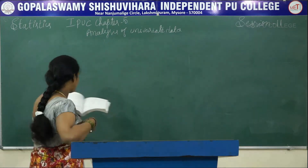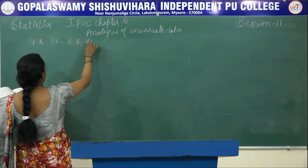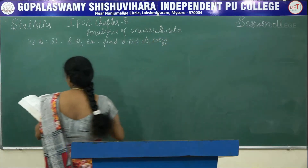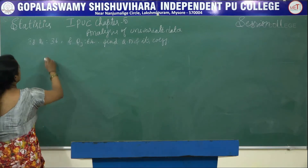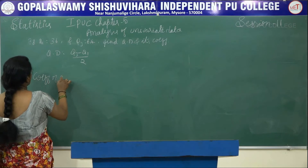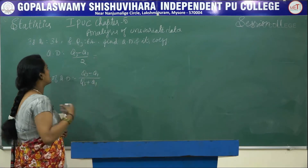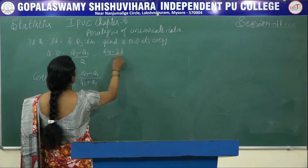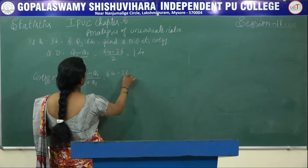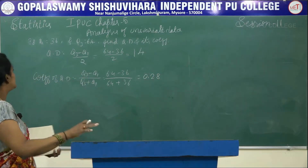Next: if Q1 is equal to 36 and Q3 is equal to 64, find QD and its coefficient. So directly they have given the Q1 and Q3 values. Quartile deviation is Q3 minus Q1 by 2, which is 64 minus 36 divided by 2, giving 14. Coefficient of QD is Q3 minus Q1 divided by Q3 plus Q1, which is 64 minus 36 divided by 64 plus 36, giving 0.28.